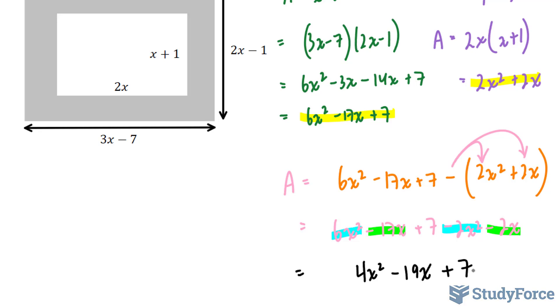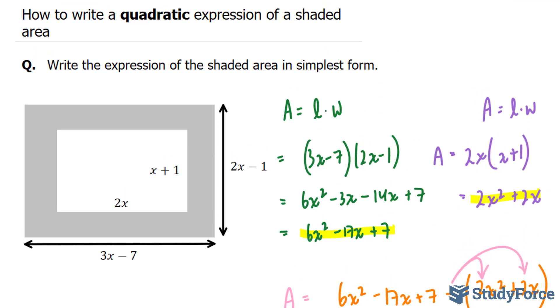So whatever your x value is, if you plug it into here, you will find out the area of the shaded portion. And so there you have it. That is how to write a quadratic expression of a shaded area.